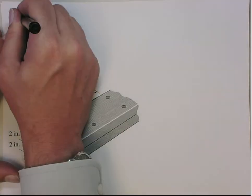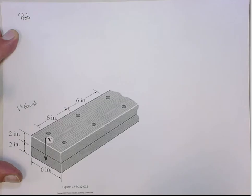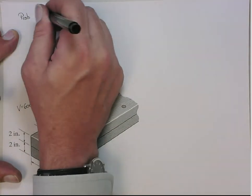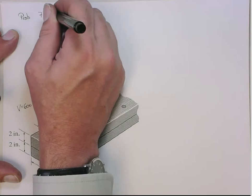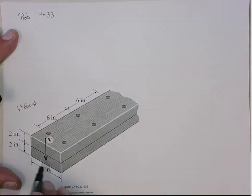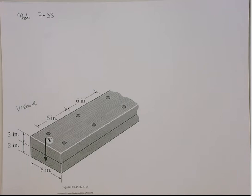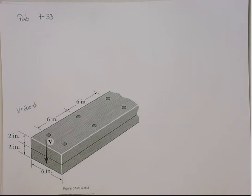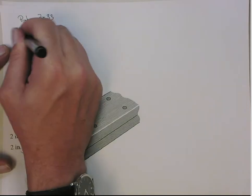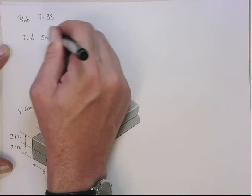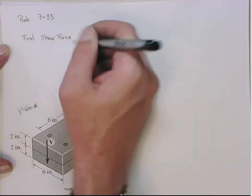Here is problem 733. It's actually the same for 733 and 732, but let's do 733. What they give you here is two boards that are nailed together at six-inch spacings, two nails at each line. The downward shear is given at 600 pounds, and they want you to find the shear force picked up at each nail.